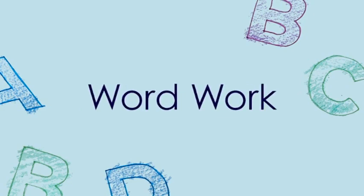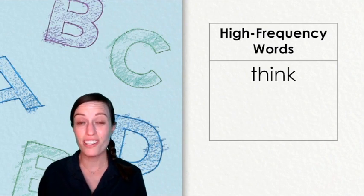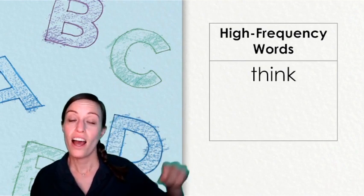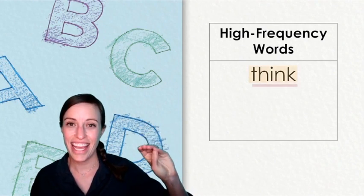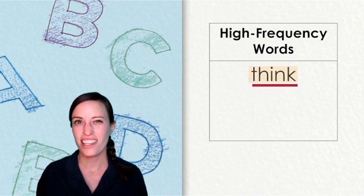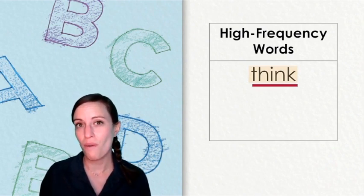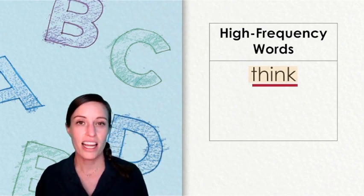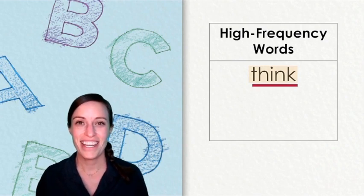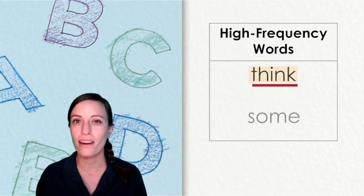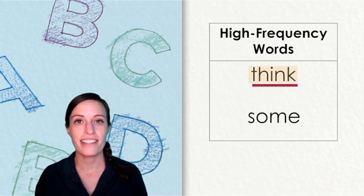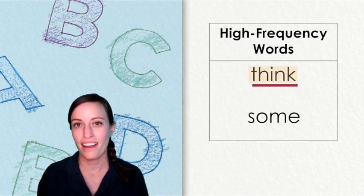Now it's time to learn high frequency words together. It's time to think about words readers use a lot. Let's take a peek at this first high frequency word together. It plays fair so we can tap it out. Did you hear that digraph TH at the beginning? And then after that middle vowel, the short I, there's an ending blend. It's kind of fun to say — try it with me. Here is another high frequency word that we will be working with. This word is some. Take a close look and say it with me. Some.